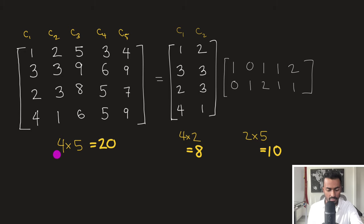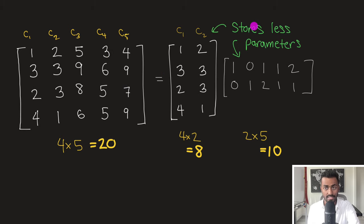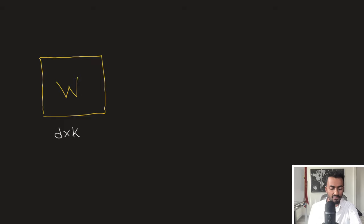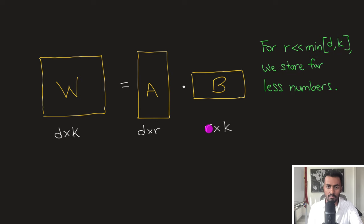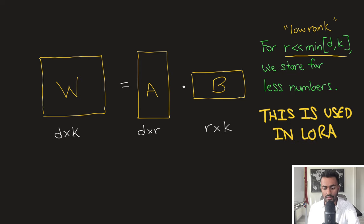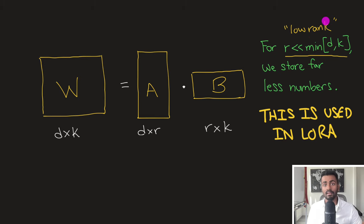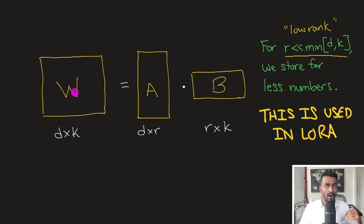If we sum up the parameters: the original matrix has 20 numbers, whereas the two smaller matrices together have only 18 — storing fewer parameters. In general, if we have a weight matrix of shape D×K, we can decompose it into two matrices of shape D×R and R×K. As long as rank R is much less than D and K, we store fewer parameters. This will be very useful for LoRA: if the rank R is low, we can efficiently store a small number of parameters when fine-tuning on a new task.